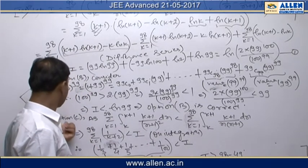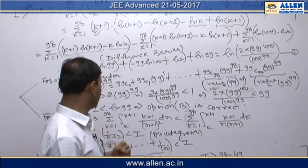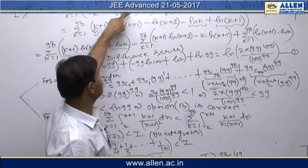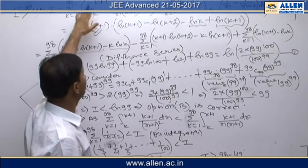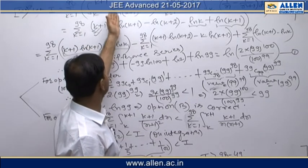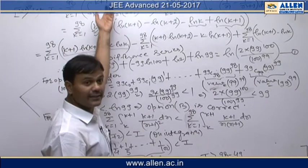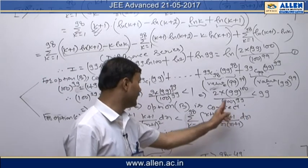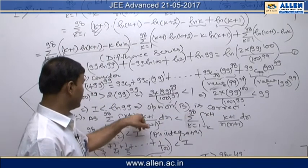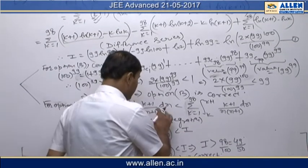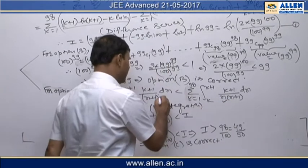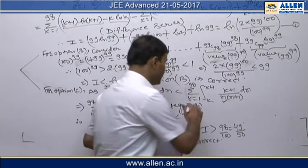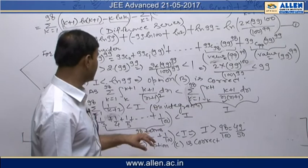For option C, we use the fact that as k increases from 1 to 98, the function (k+1)/(x(x+1)) is a decreasing function — as x increases, the function value decreases. So our integral I is greater than the integral of (k+1)/(x+1)^2 over the same interval, since replacing x in the denominator with (x+1) makes the denominator larger and thus the function smaller.